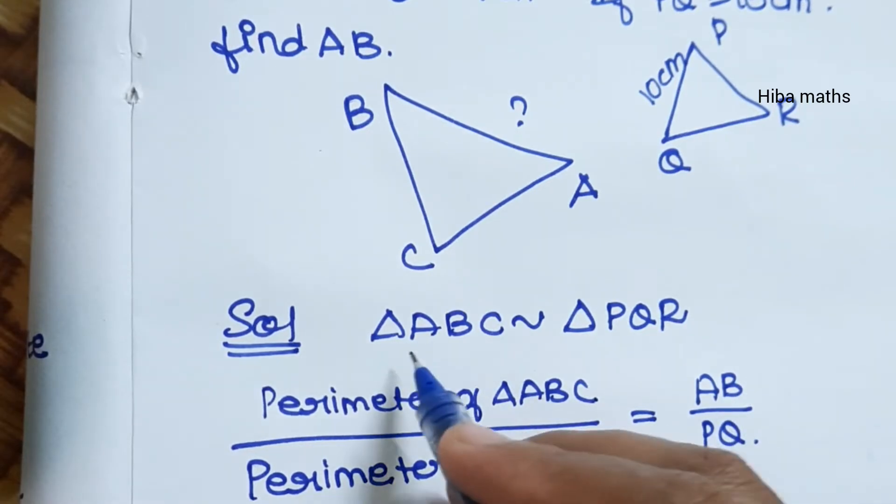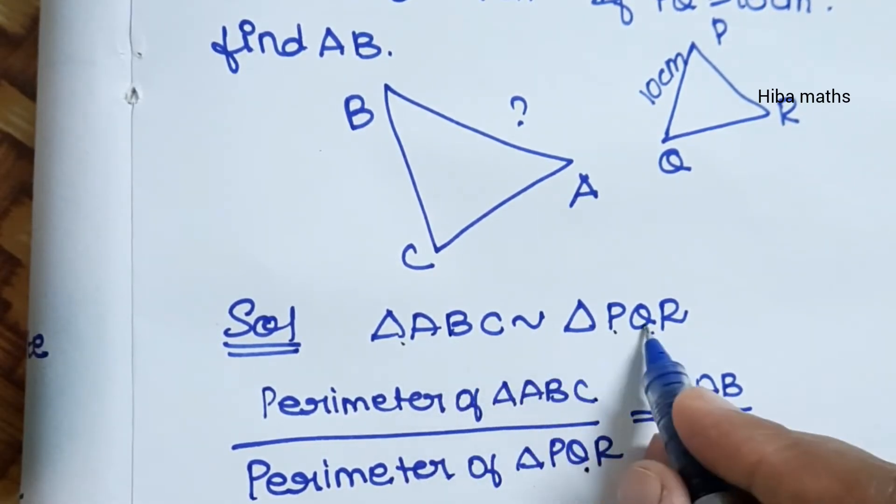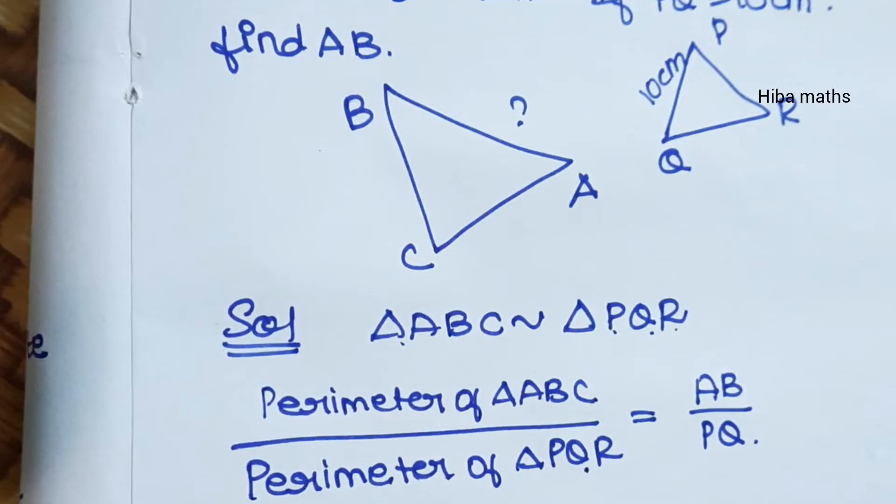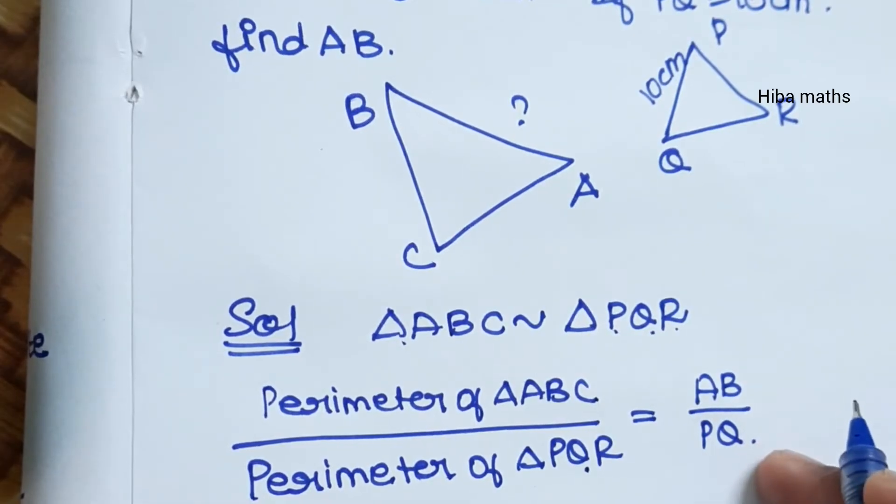Corresponding sides are the same as AB by PQ, BC by QR, etc. Corresponding sides are the same for all three sides. For example, if we have a question, we have an answer in the question.